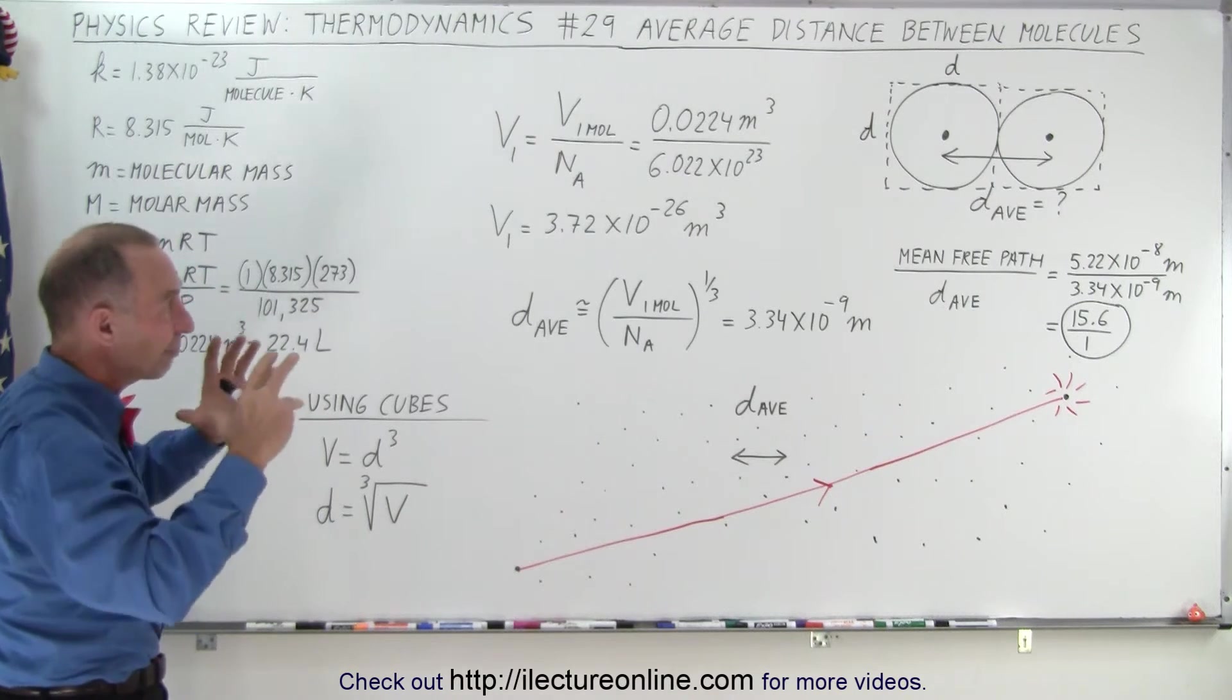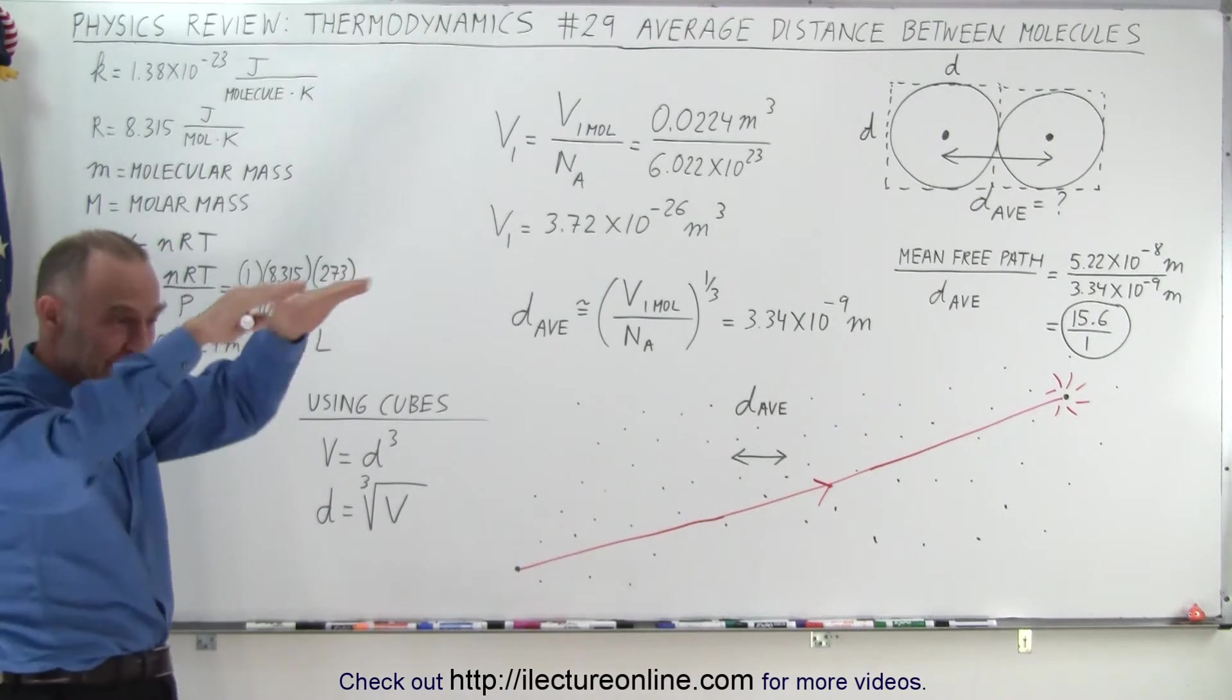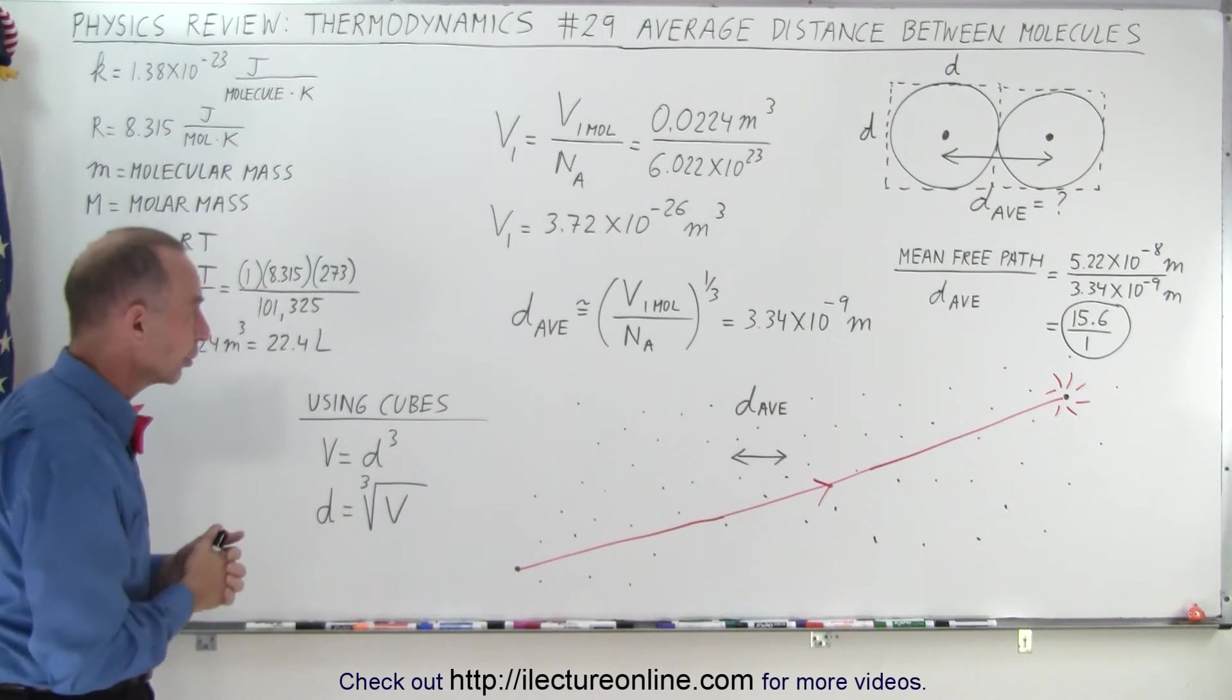Now, there's a relationship between the volume that a molecule occupies. It's not just the volume of the molecule itself, because that's really tiny, but it's the space around it that it has available to it, on average, compared to all the other molecules.